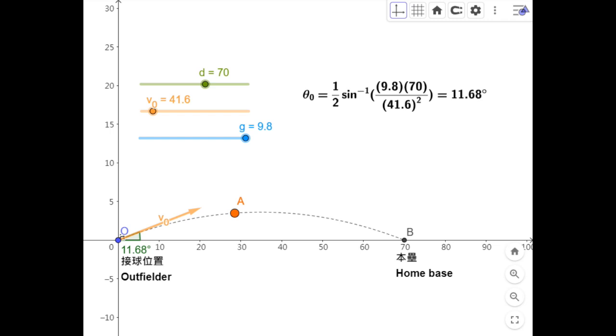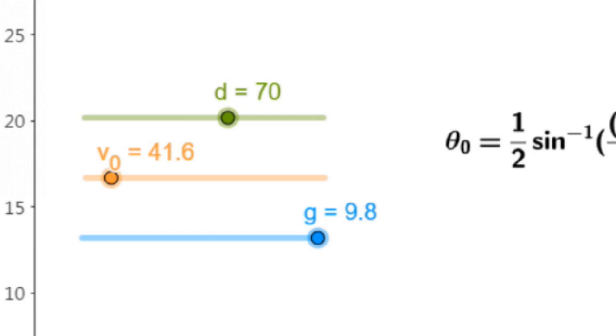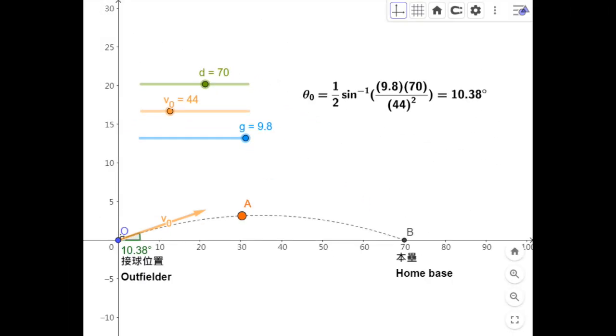But it is quite apparent that every outfielder has a different arm strength, thus a different initial speed. And the distance also varies. If the catcher throws the ball back at 44 meters per second, or 98.2 miles per hour, then the pitch angle becomes 10.3 degrees.